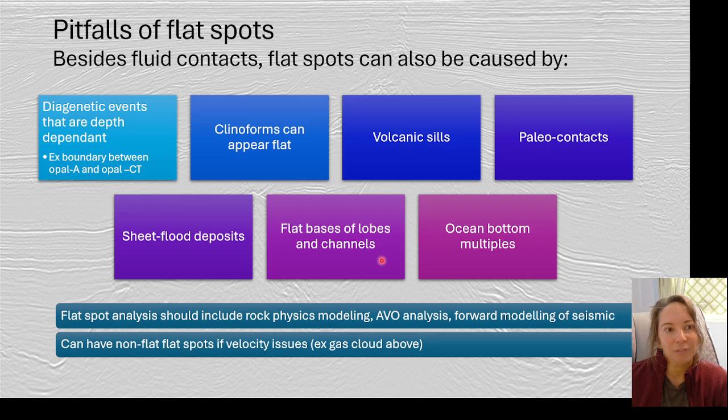There's also a lot of pitfalls with flat spots. We talked about some of these in the DHI lecture. You could have diagenic events that cause a pseudo flat spot. There's cases where clinoforms can appear flat. Volcanic sills often get intruded in flat manners. You could have all sorts of paleocontacts, sheet flood deposits, so those fans can often look flat. The base of fan lobes and channels, ocean bottom multiples. So there's a lot of work to be done if you notice a flat spot or something that's cross-cutting. Even think about 2D versus 3D data, where you could have some of that ghosting of other features into your section.